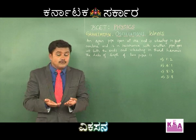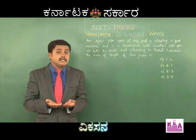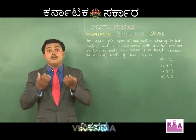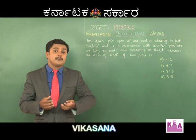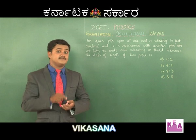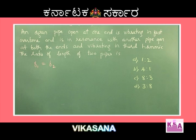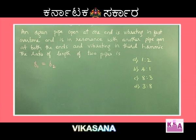Here, which are the two frequencies that are equal? One of them is from the closed pipe and the other is from the open pipe. So I can directly write that F1 is equal to F2. Let us understand what F1 is — it is from the closed pipe because it is open at one end. It is a closed pipe.